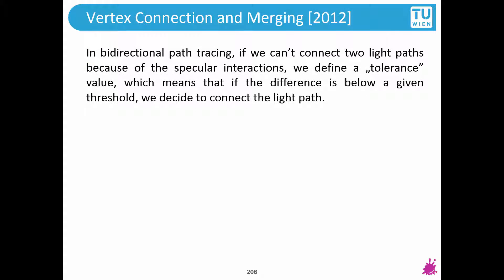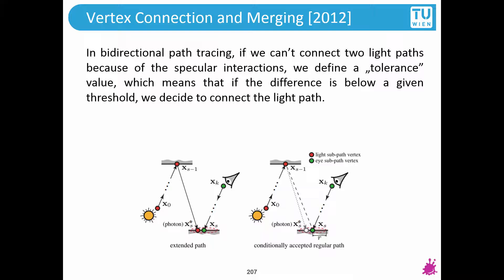Now let's proceed to vertex connection and merging by Ilyan Georgiev and colleagues. What he proposes is to conditionally accept a path — the vertex next to xs — but pretend that we indeed have the hit. This basically means we have a biased connection: something that didn't really happen but we pretend that it did. We have this r, the merging radius. On the left side, xs-star would be placed at xs instead if it is close by, meaning within a circle of radius r.